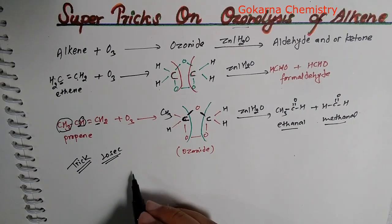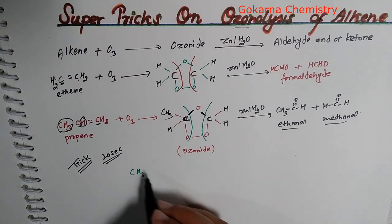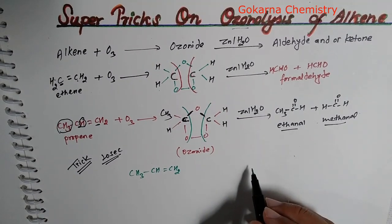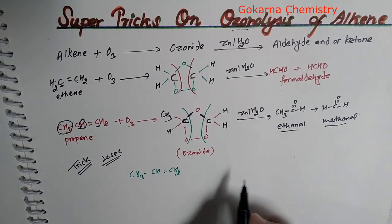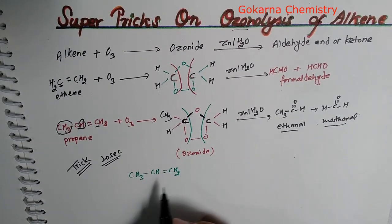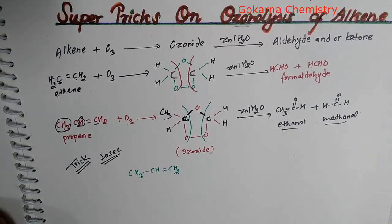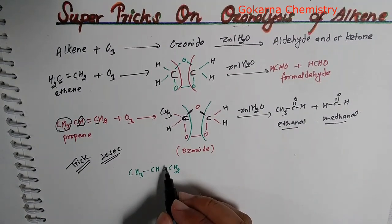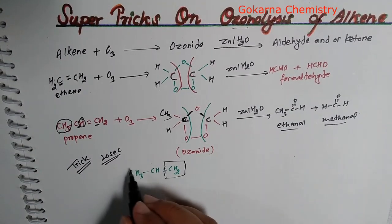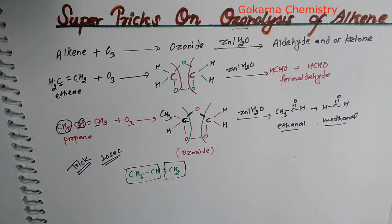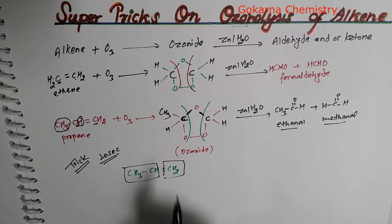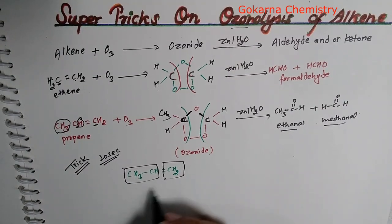Let's say CH3-CH double bond CH2. If you have an alkene, you have a big trick. What is the trick? You have a double bond. You have to apply oxygen to the right side and the left side. If you add oxygen to both sides,